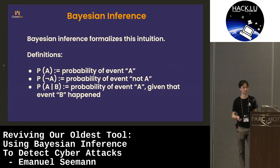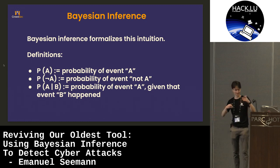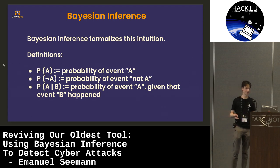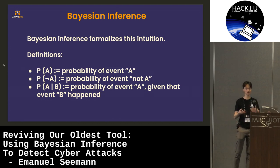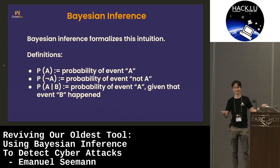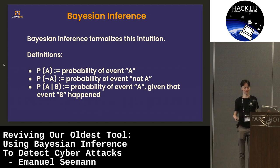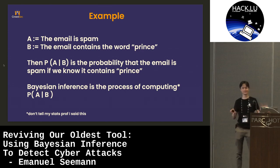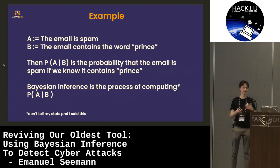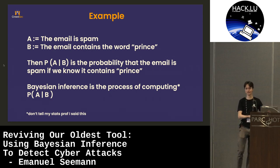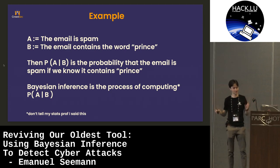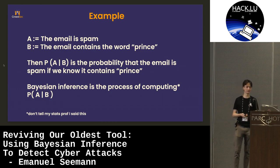For an example: you are in the streets and the street is wet — event B is the street is wet. And now you want to know the probability that it is raining. Knowing that the street is wet might give you a very good hint that it is raining. It's not 100% because you might be in Paris and some guy might have, you know, that's why the street is wet. To formalize this for email: A is the email is spam, B is the email contains the word prints. Then P(A|B) is the probability that the email is spam if we know it contains the word prints. Bayesian inference is the process of computing this value P(A|B).